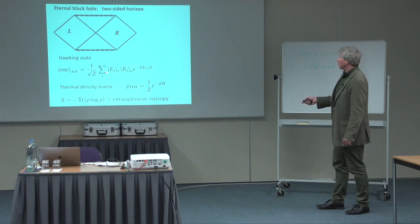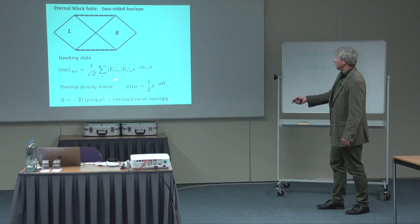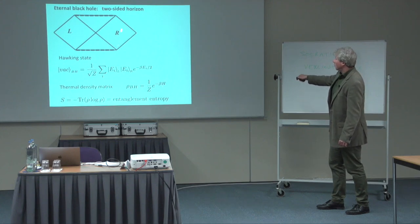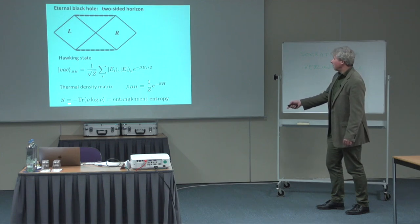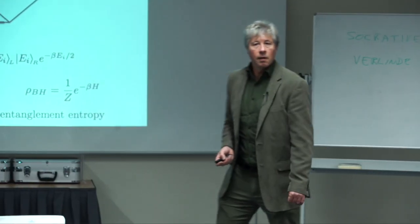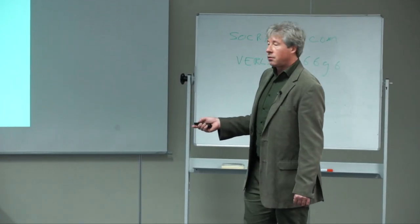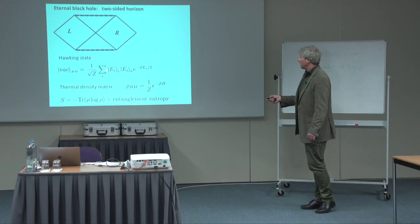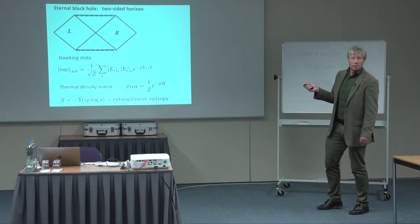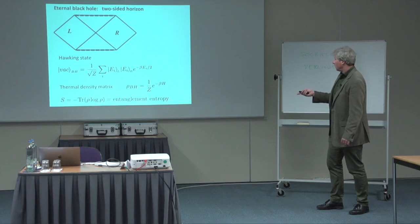You can define an entanglement entropy from this density matrix that tells you how much entanglement exists between the two sides. In quantum field theory this would diverge, but the whole idea is that in quantum gravity this entanglement is connected to the Bekenstein-Hawking formula. So the Bekenstein-Hawking formula has the interpretation of an entanglement entropy.